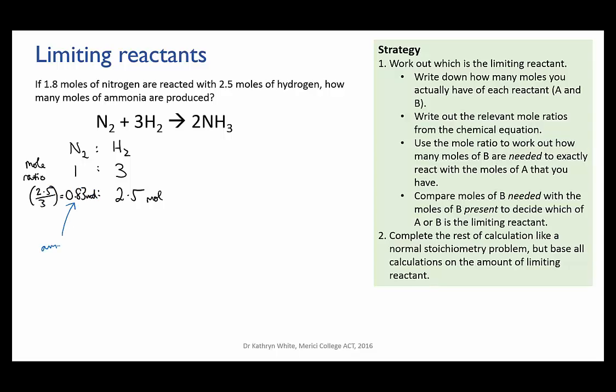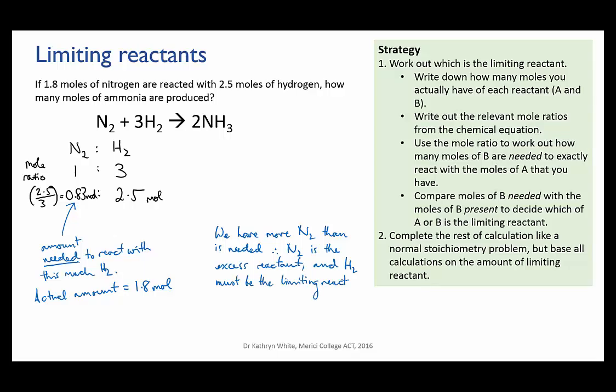So I need 0.83 moles of nitrogen to fully react with 2.5 moles of hydrogen and you'll see that we have more than 0.83 moles of nitrogen present. In fact we have 1.8 moles. So that means that all the hydrogen will react and there will still be some nitrogen left over afterwards. So that leads us to the same conclusion as before that in this case hydrogen is the limiting reactant and nitrogen is the excess reactant.